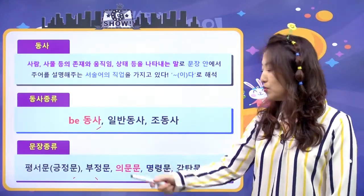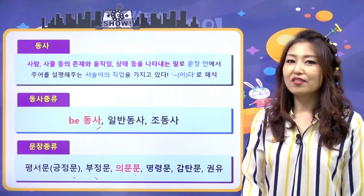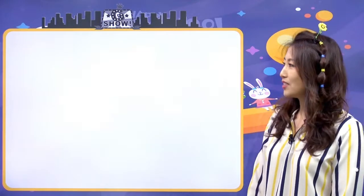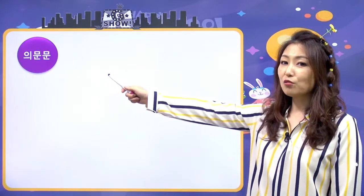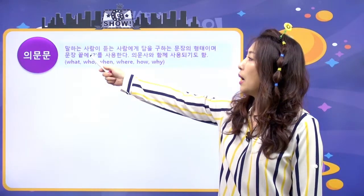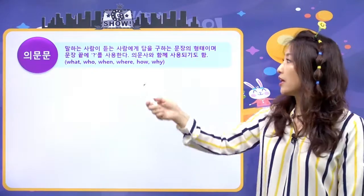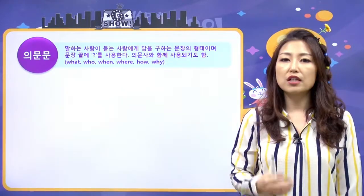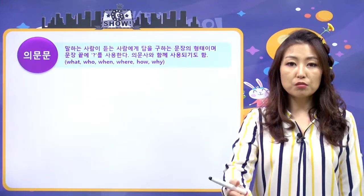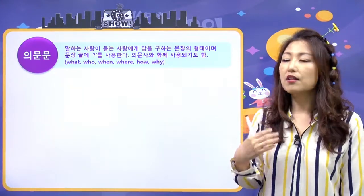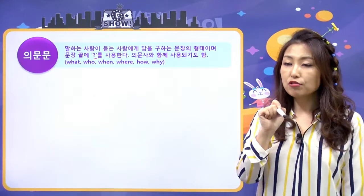이번 시간에는 의문문에 대해서 살펴볼 거예요. 비동사 의문문 시작해 볼까요? 의문문은 말하는 사람이 듣는 사람에게 답을 구하는 문장의 형태예요. 쉽게 말하면 질문이에요. 질문을 했으면 답을 받아야 되죠. 그래서 문장 끝에 question mark, 물음표를 사용합니다.